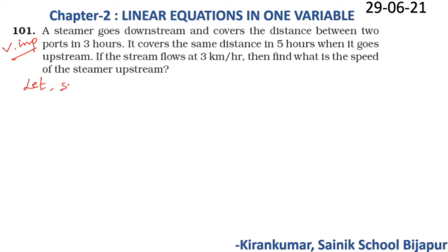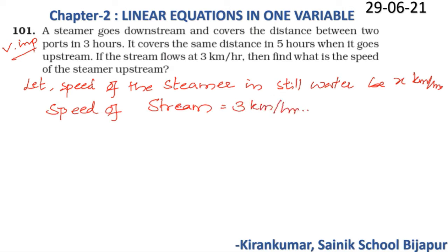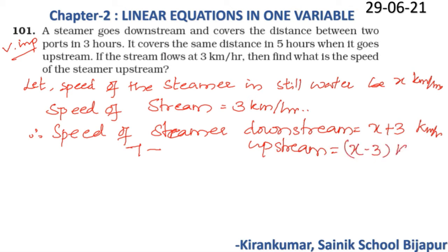Let the speed of the steamer in still water be x km/h. The speed of the stream is 3 km/h. Therefore, the speed of the steamer downstream is (x + 3) km/h, and the speed of the steamer upstream is (x − 3) km/h.